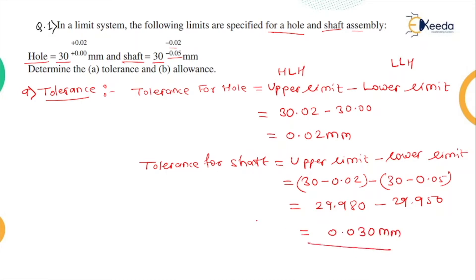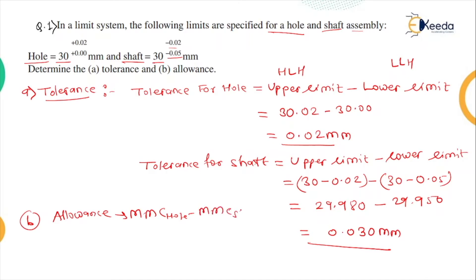So we have the tolerance for the shaft and tolerance for the hole. Now for part B, the allowance. The allowance is the maximum metal condition of the hole (MMC) minus the MMC for the shaft. So it is 30.02 minus 29.98, which gives 0.04 mm. That is the allowance for the given assembly.